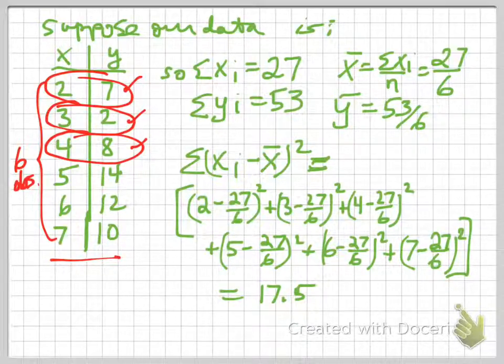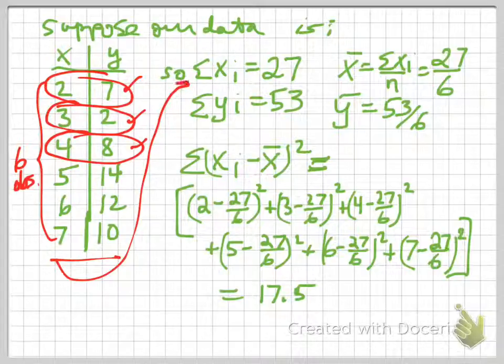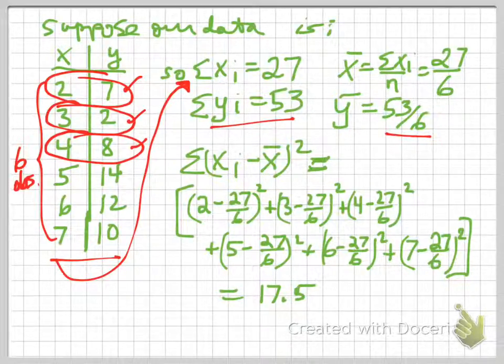So we start doing calculations, because we're going to calculate the regression coefficient. We add up all the x's, and we get the summation of x is 27, divide that by 6, we have 27 over 6. We add up all the y's, and divide by 6, we get the mean of y.